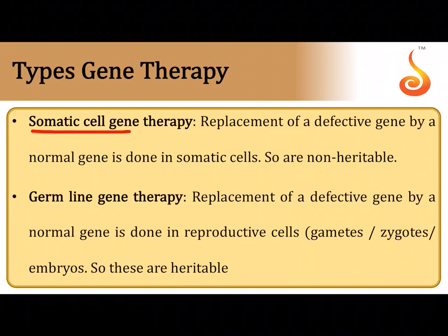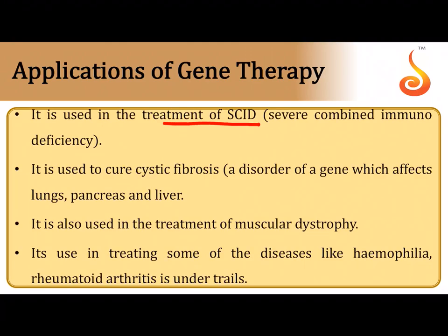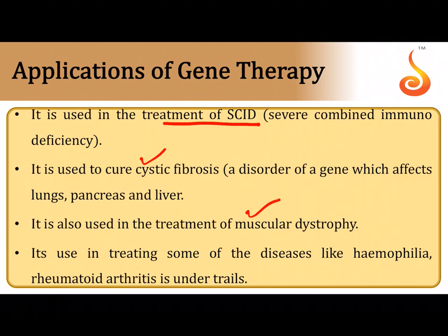Somatic cell gene therapy is done in somatic cells and cannot be passed to the next generation since germinal cells are not involved. Germline gene therapy involves replacing the defective gene in reproductive cells — gametes, zygote, or the embryo — and is heritable and permanent. Gene therapy is applied not only for SCID but also for congenital genetic diseases like cystic fibrosis, muscular dystrophy, and illnesses such as hemophilia and rheumatoid arthritis, many of which are currently under clinical trials.